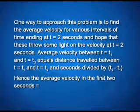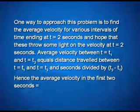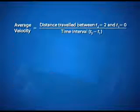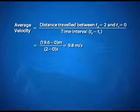One way to approach this problem is to find the average velocity for various intervals of time ending at t = 2 seconds, hoping that these throw some light on the velocity at t = 2 seconds. Average velocity between t = t₁ and t = t₂ equals distance divided by (t₂ - t₁). Hence, the average velocity in the first 2 seconds is given by (19.6 - 0) / (2 - 0) = 9.8 meters per second.